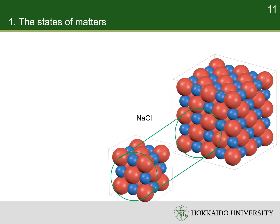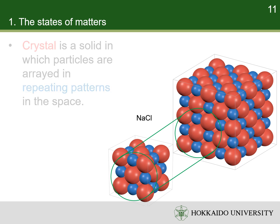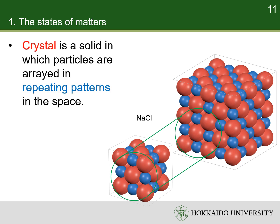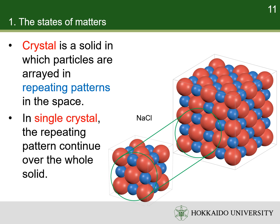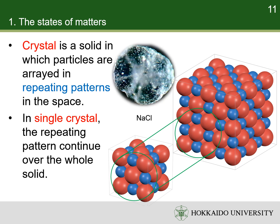The atoms, molecules, or ions that make up solids may be arranged in an orderly repeating pattern. Materials whose constituents are arranged in a regular pattern are known as crystals. In some cases, the regular ordering can continue unbroken over the whole solid — such a solid is a single crystal. For example, each grain of sodium chloride is a single crystal.